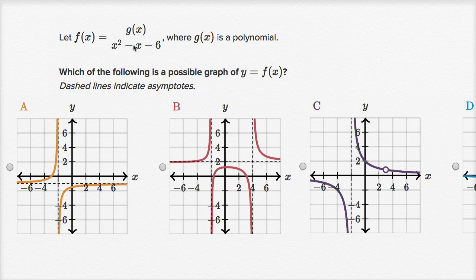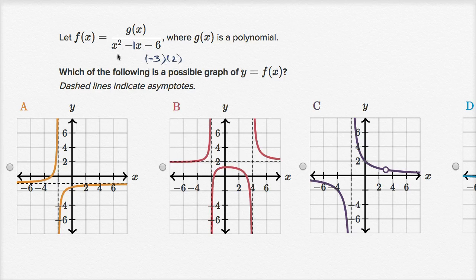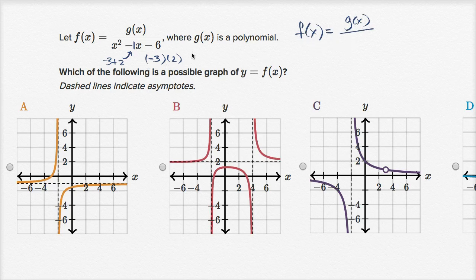The coefficient on the first degree term is negative one, and the constant is negative six. So if we want to factor that, we need two numbers whose product is negative six and that add up to negative one. Negative three times positive two is negative six, and negative three plus two equals negative one. So f of x equals g of x over x minus three times x plus two. The denominator equals zero for x equals three or x equals negative two.